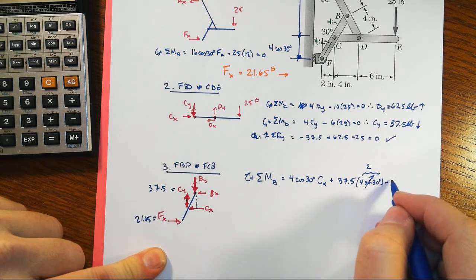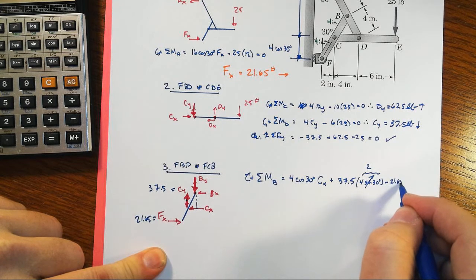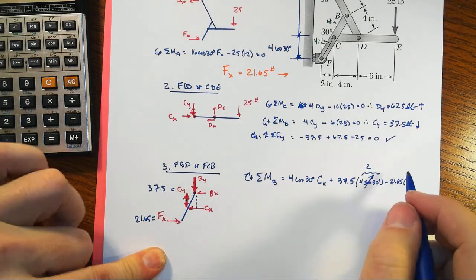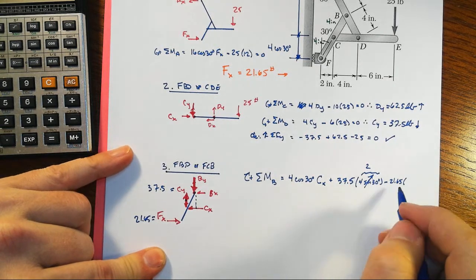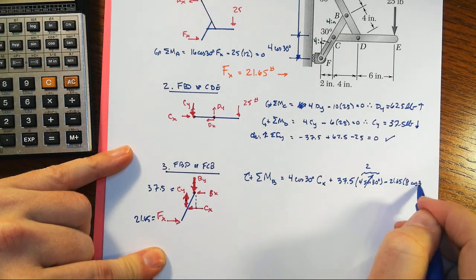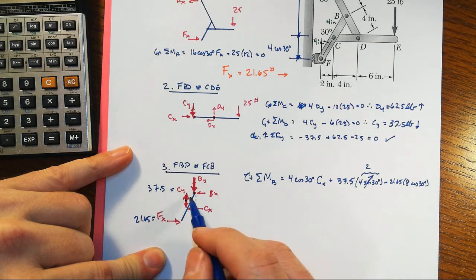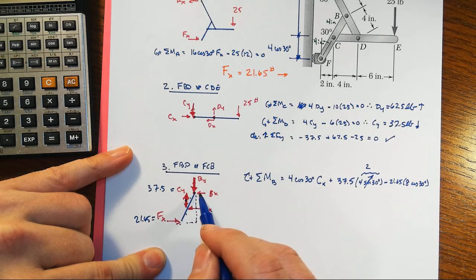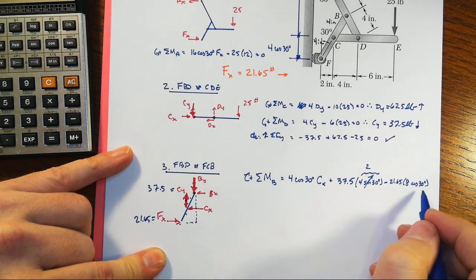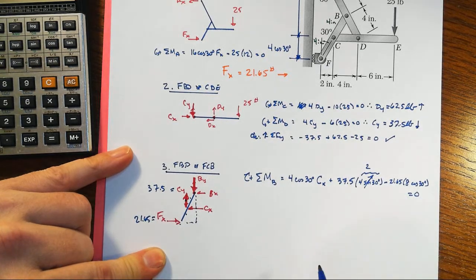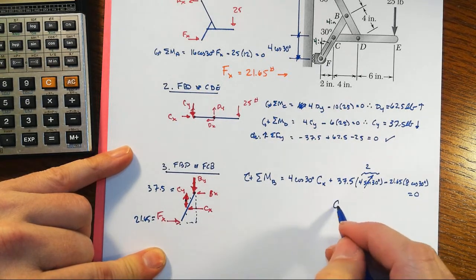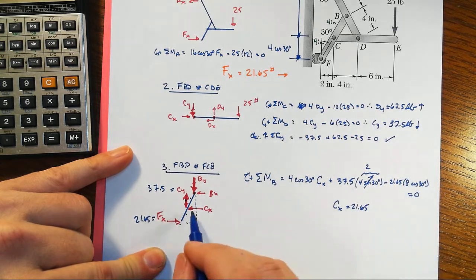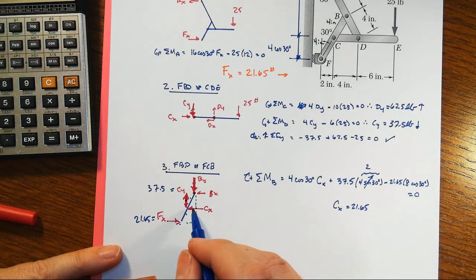So 21.65 times that total height, which is a moment arm of 8 times cosine 30 degrees—4 and 4 at 30 degrees. We want that total height from there to there. And of course, set that equal to zero, and we find out that CX equals 21.65 plus as shown. So we guessed correctly what direction. That means it's correct as shown up here, and so therefore the quantity that we're after.